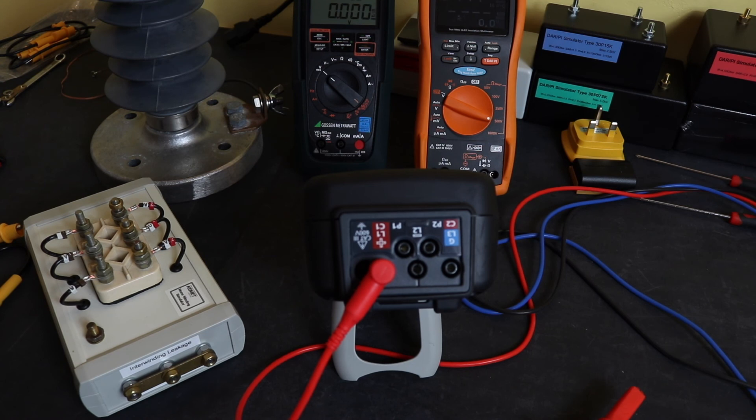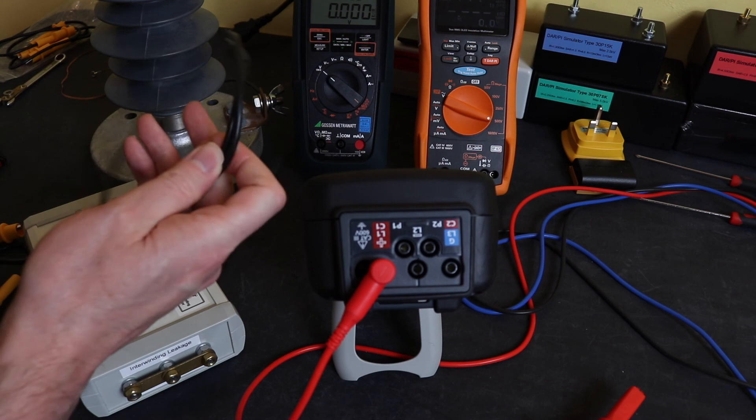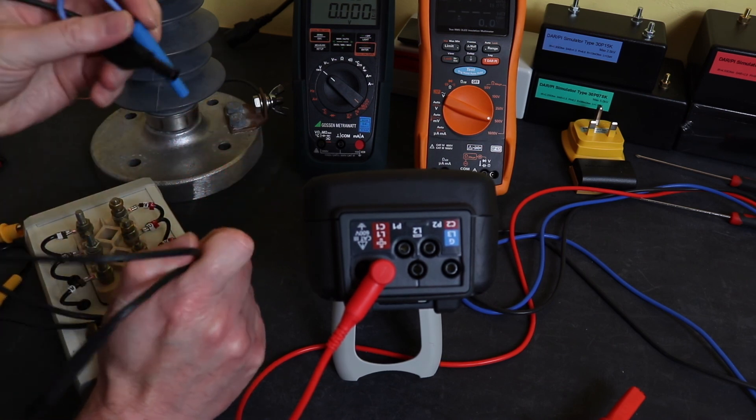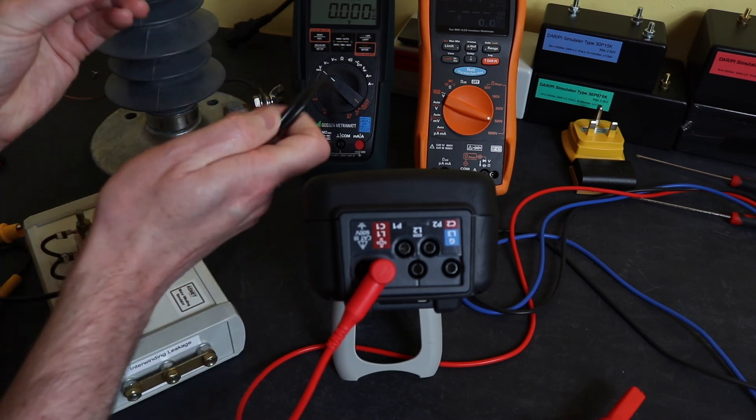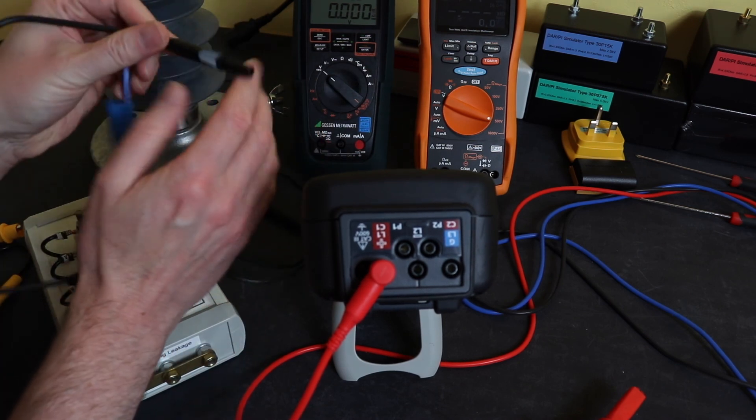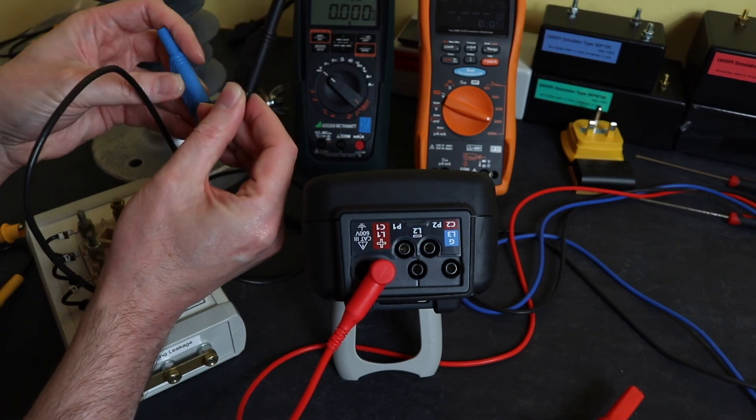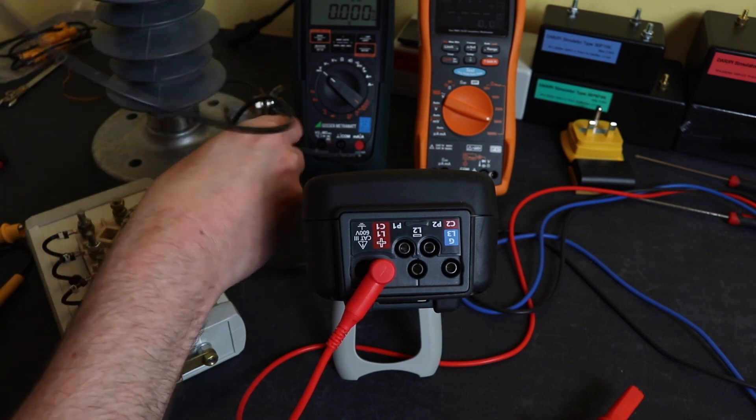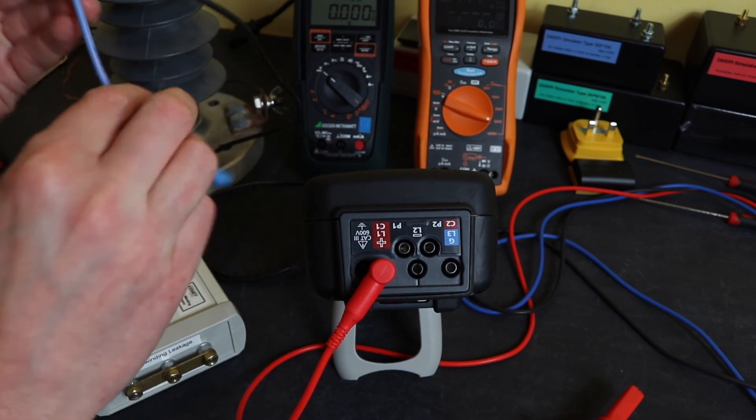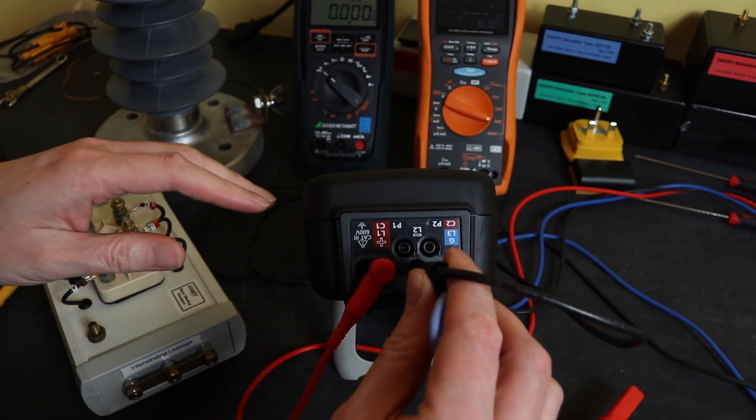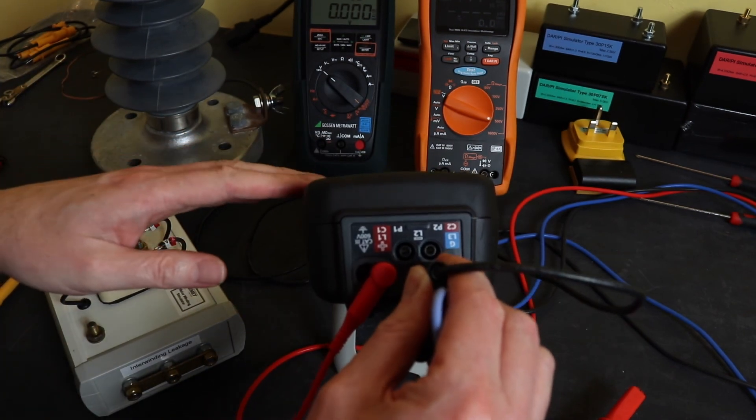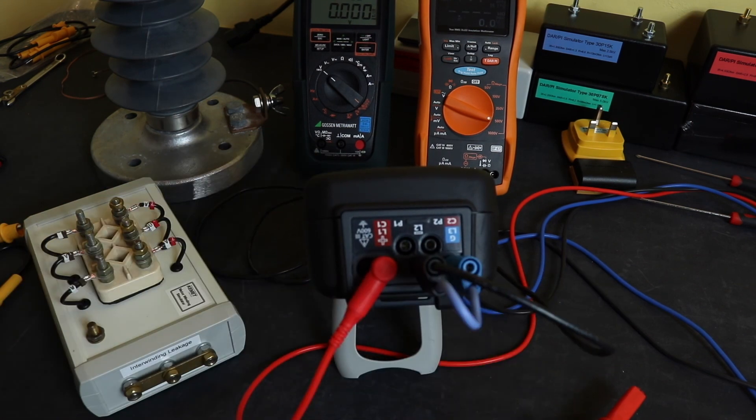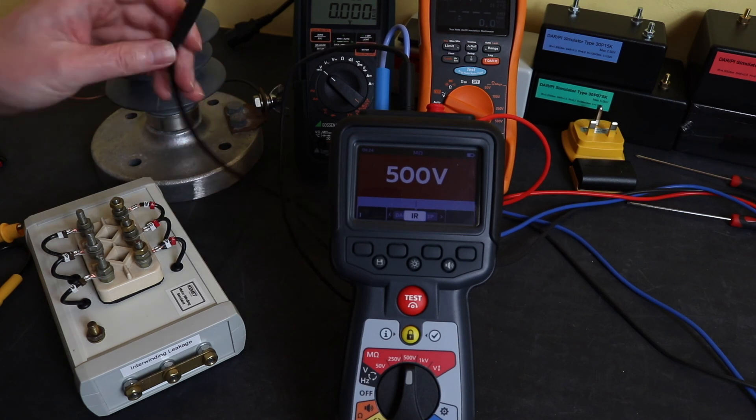The first way of using the guard terminal is to use it with a shielded test lead. Megger don't actually provide you with a shielded test lead as part of the accessories. This one is from a different insulation tester. You can see the black lead with a screen all the way up terminated at one end.